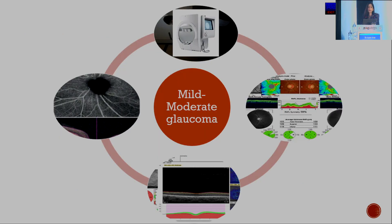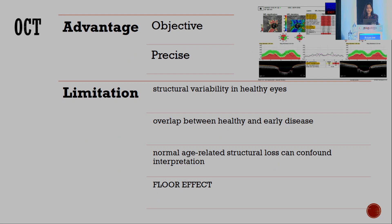Detecting progression in mild to moderate glaucoma, or a patient moving from no glaucoma into early glaucoma, is a no-brainer. The OCT offers the advantage of being objective and precise, with the limitations of structural variability in healthy eyes — an overlap may be present between healthy eyes and early disease. A normal age-related structural loss can confound interpretation, but most importantly, there is the floor effect that I will be coming upon briefly.